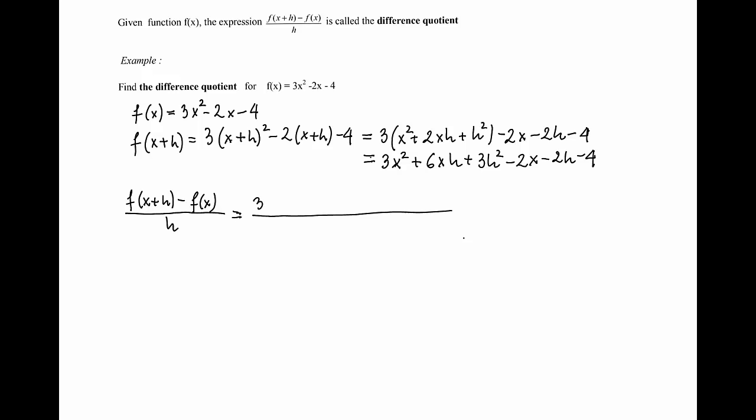So f(x+h) is 3x squared plus 6xh plus 3h squared minus 2x minus 2h minus 4. That's f(x+h).